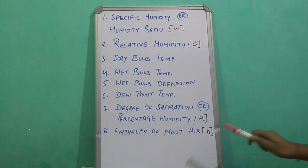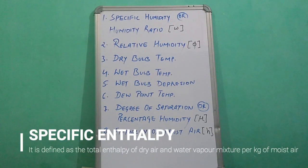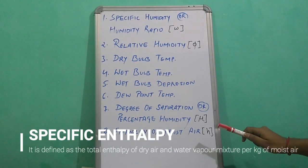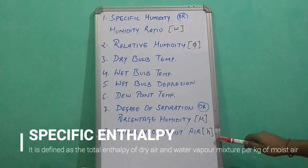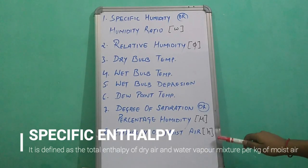Enthalpy of moist air is defined as the total enthalpy of the dry air and water vapor mixture per kg of moist air.